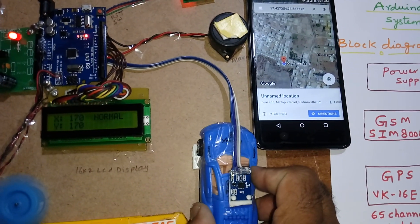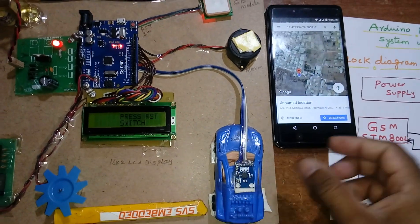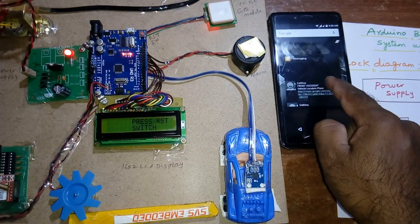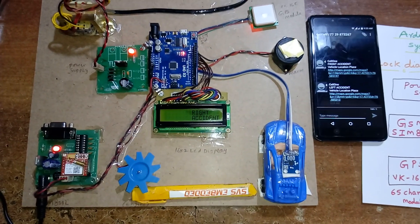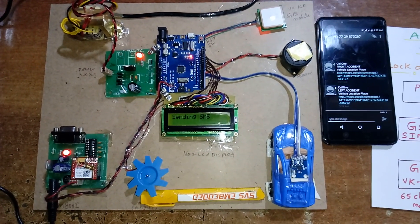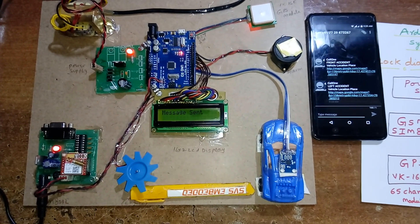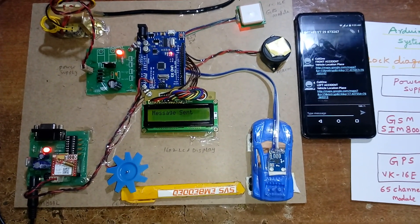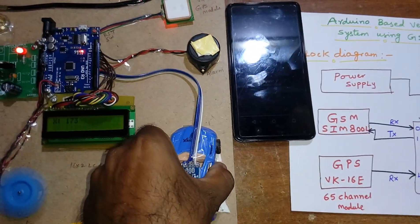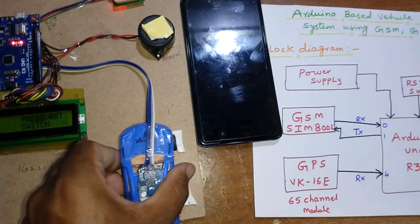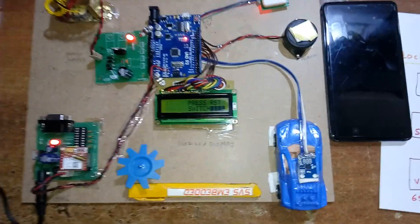Next, demonstrating a right accident. The display shows 'right accident' and sends the vehicle location via Google Maps in an SMS. You can press the reset button to stop the alarm and return to normal state.